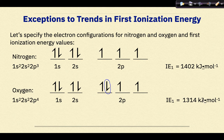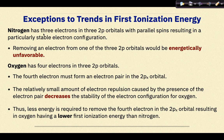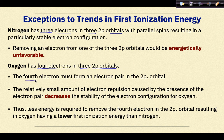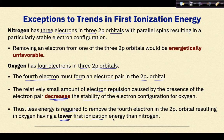Why does this happen? Nitrogen has three electrons in three 2p orbitals with parallel spins, resulting in a particularly stable electron configuration. Removing an electron from one of the three 2p orbitals would be energetically unfavorable. Oxygen has four electrons in three 2p orbitals; the fourth electron must form an electron pair in the 2px orbital. The relative electron repulsion caused by this electron pair decreases the stability of oxygen's configuration. Thus, less energy is required to remove the fourth electron in the 2px orbital, resulting in oxygen having a lower first ionization energy than nitrogen.